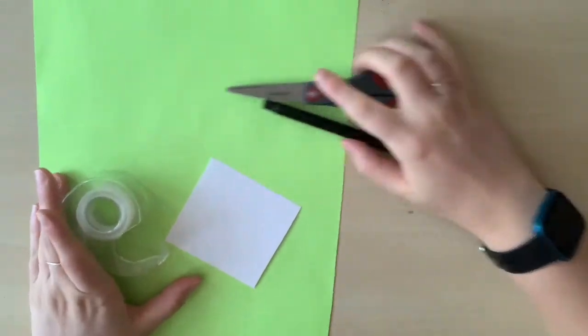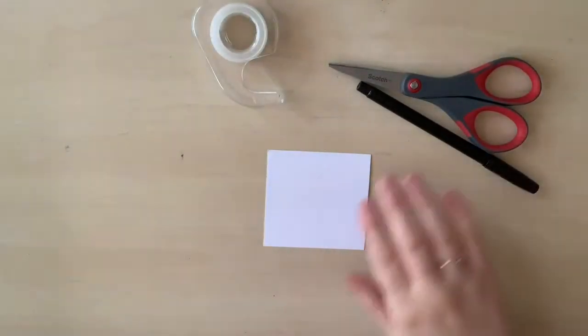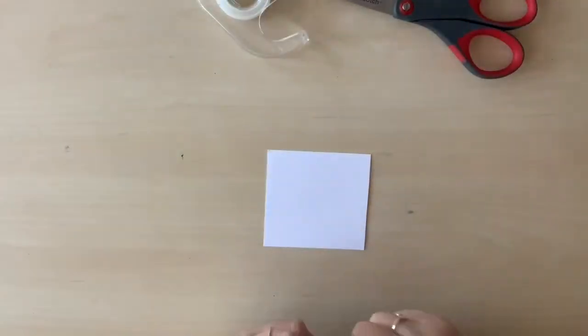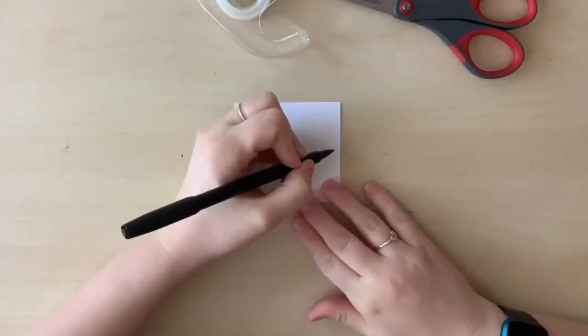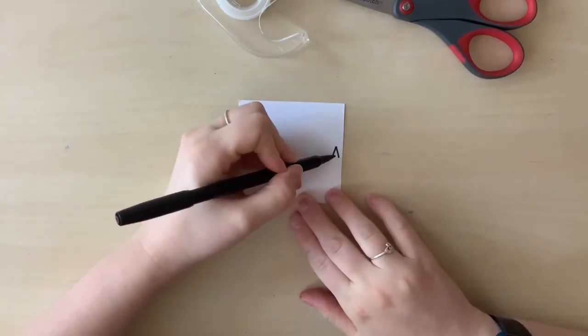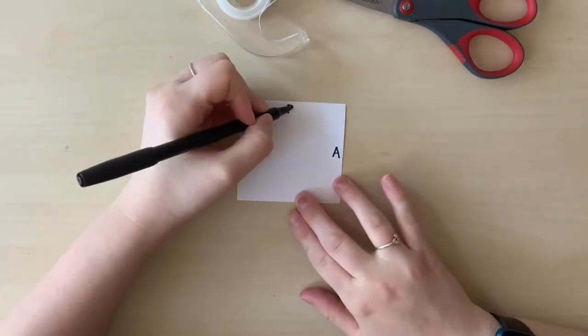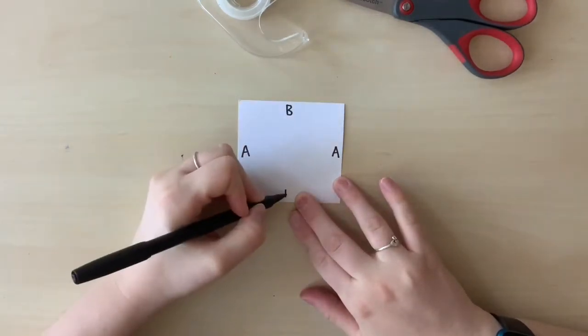To start, we'll use the small piece of paper. It doesn't have to be a square, but it needs to be small enough that it can repeat inside of the larger piece of paper multiple times. First, I'll label the sides. So on the vertical sides, the ones that go up and down, I put them both as A. In the horizontal lines, the top and the bottom, I will put a B.